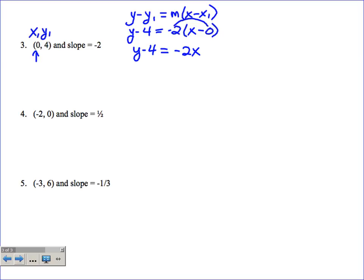If I would distribute negative 2 to negative 0 or minus 0, I would just get 0. I don't really need to write plus 0 at the end of this. It doesn't really matter if I write it. I shouldn't write it because adding 0 to something is a little redundant. My final step, I do need to solve for y, so I'm going to add 4 to both sides, which will end up giving me y equals negative 2x plus 4 as my final answer.